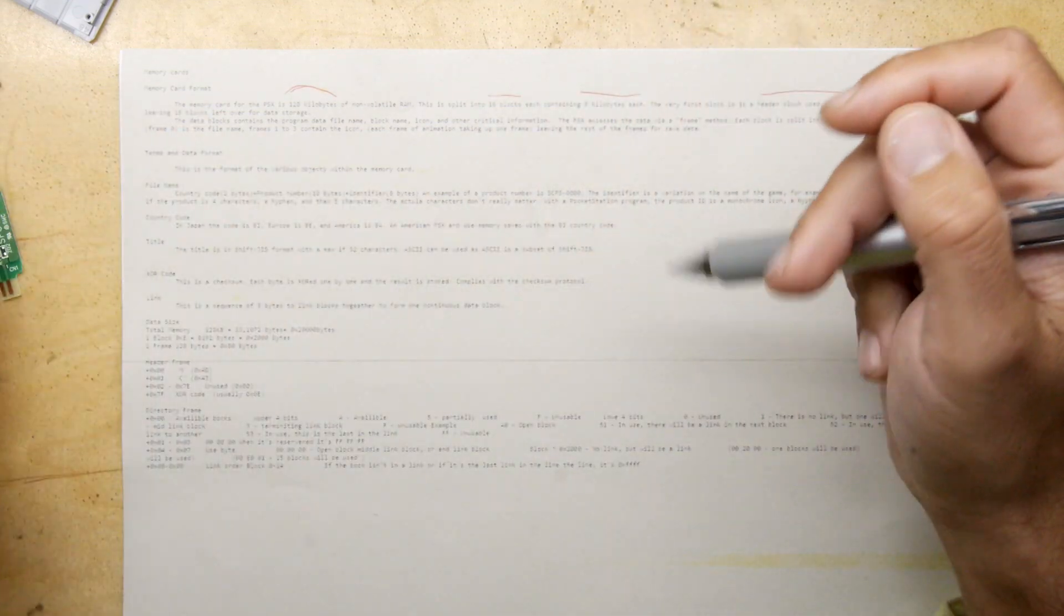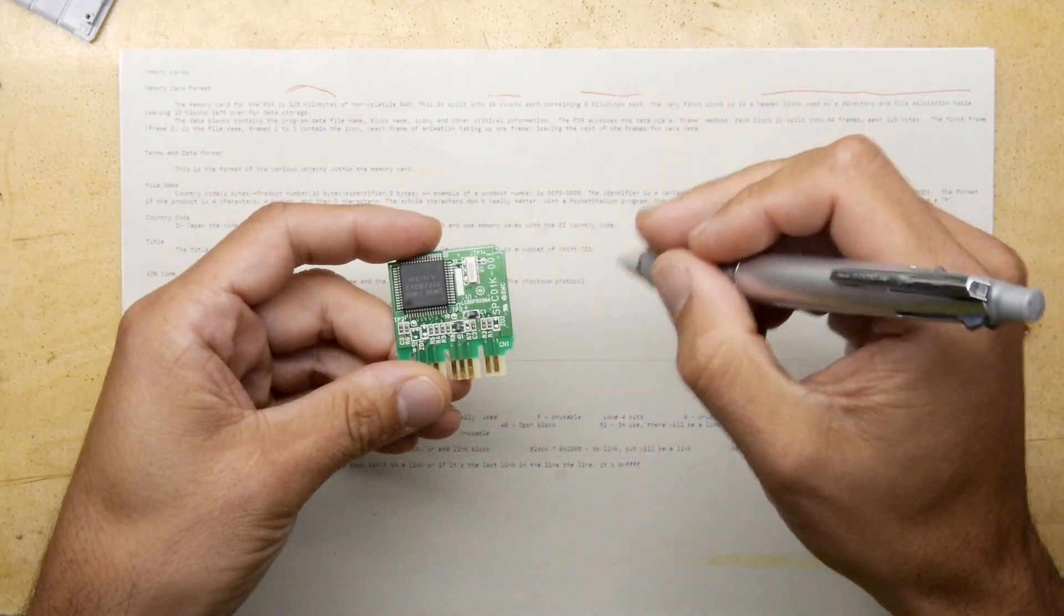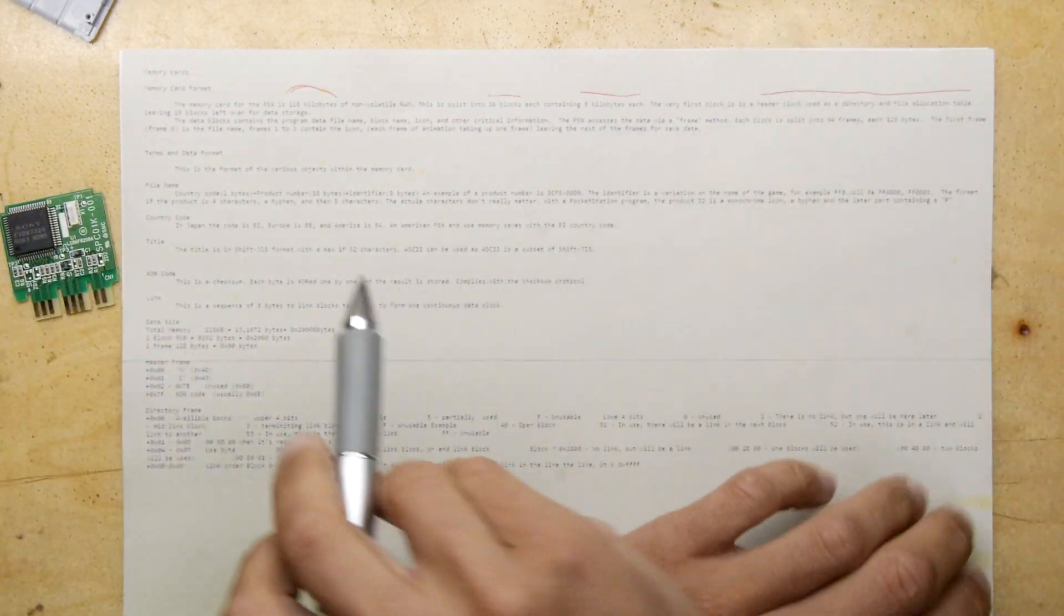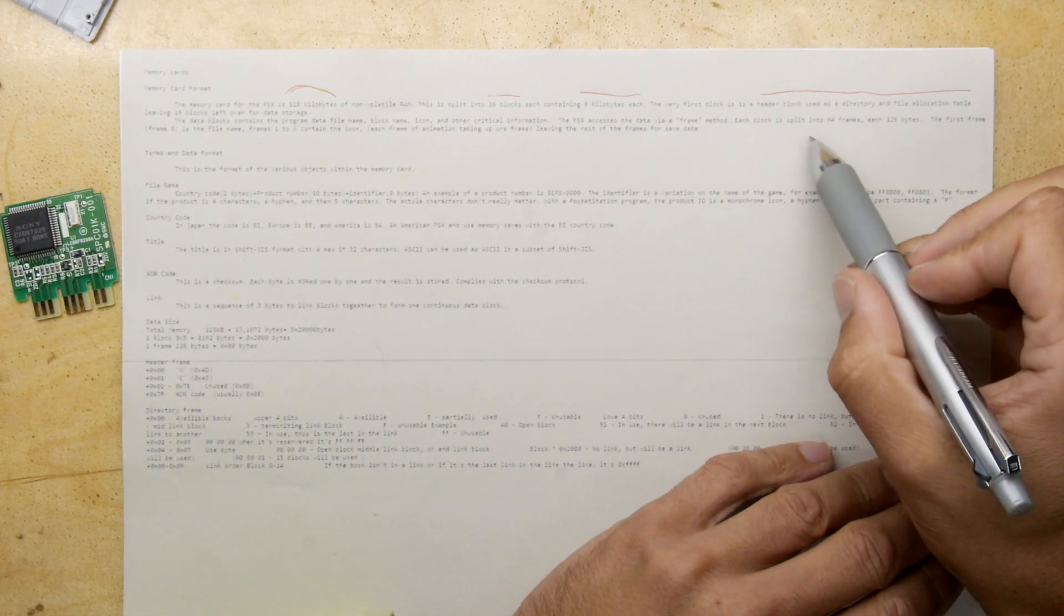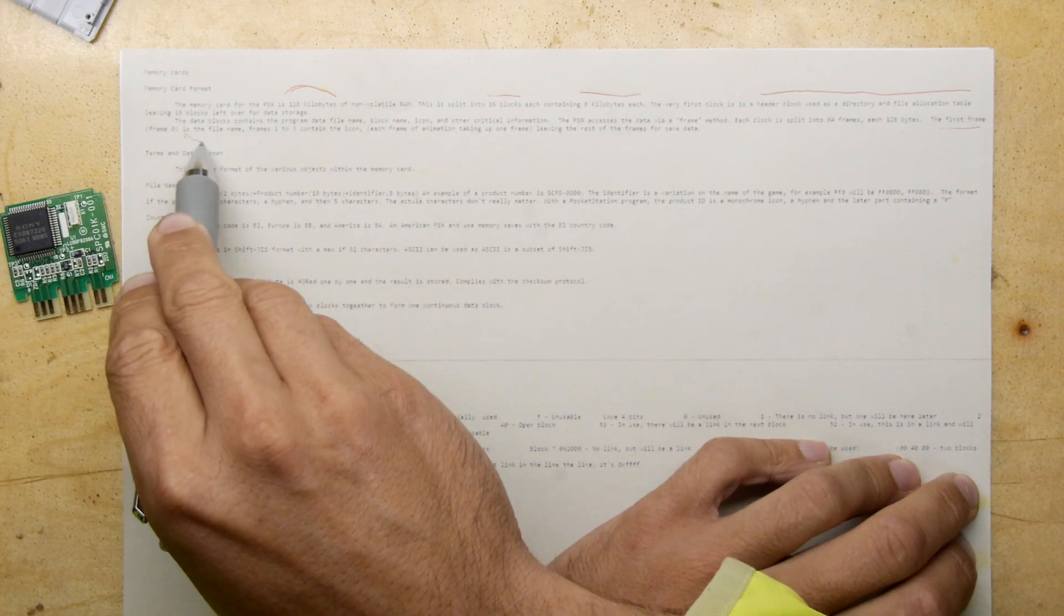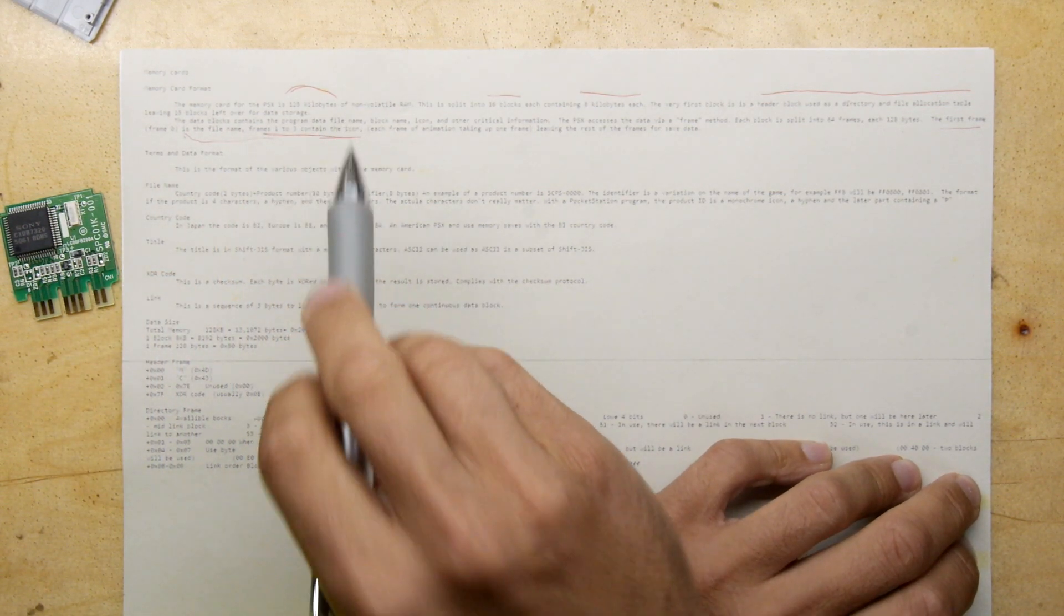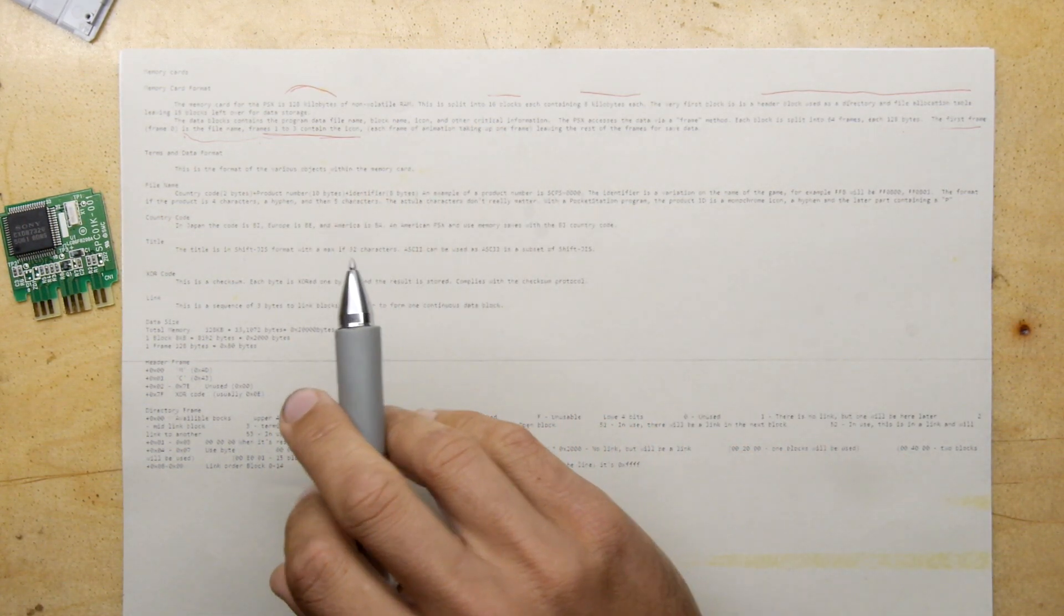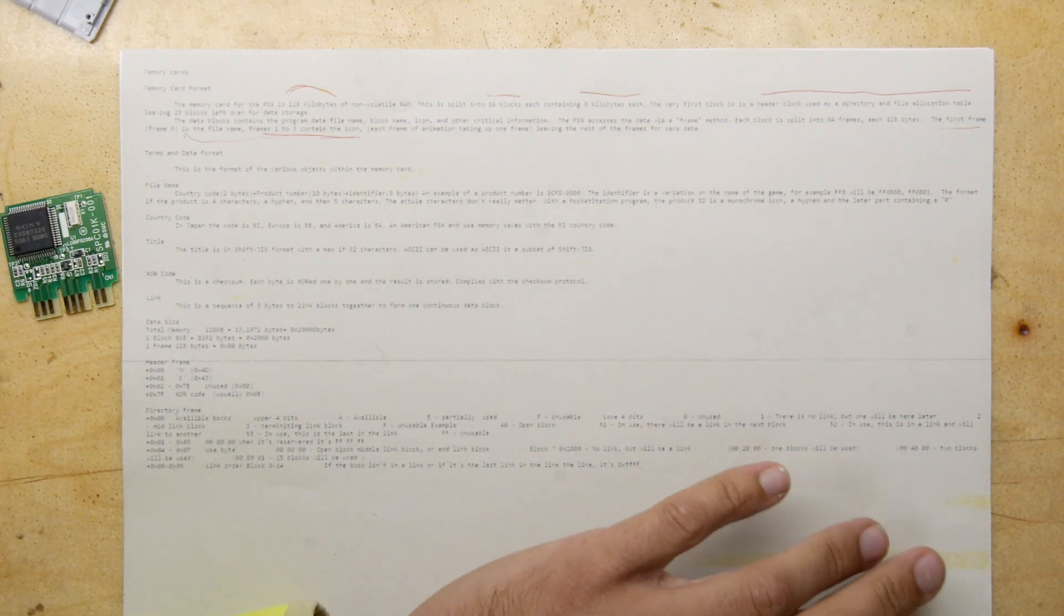Okay, the data blocks contain the program data, file name, block name, icon, and other critical information. So with that tiny amount of storage, you remember when you used to have these games, they have a little icon, didn't they, which had the game icon? You're trying to squeeze in actually all of that. And it says here each block is 64 frames, each 128 bytes. The first frame is the file name. Frames one to three contain the icon because you have, remember, you have little animations, so that's just three frames of animation going on with that. And then it's saying using the rest of the frames for save data.